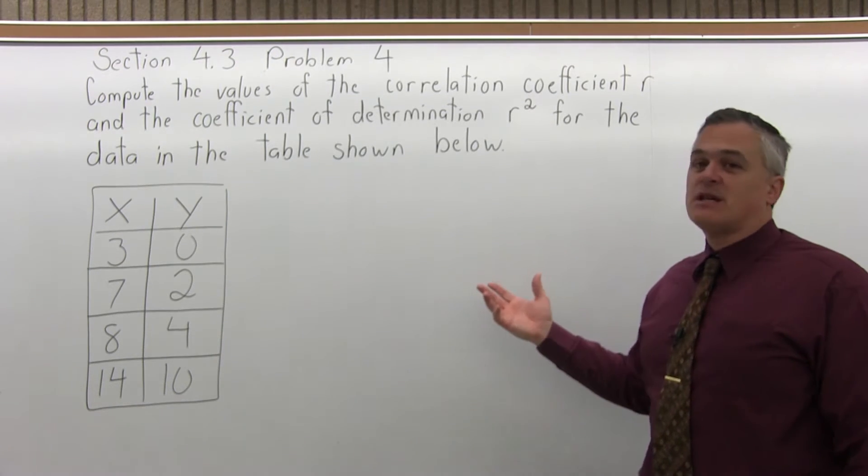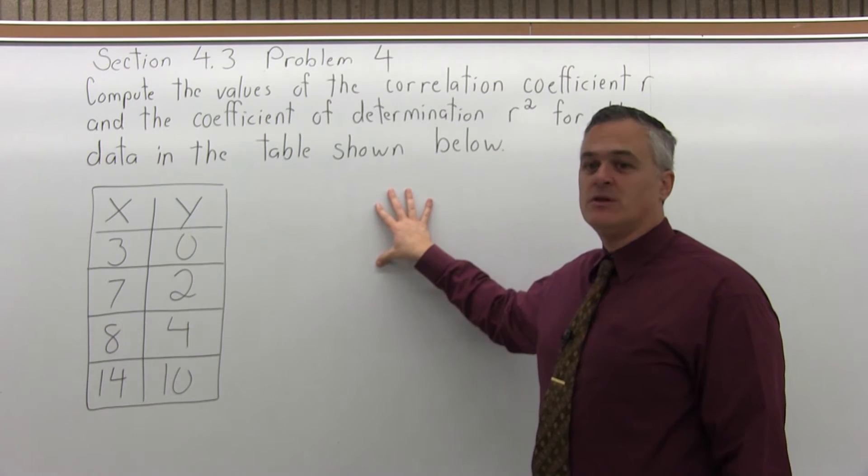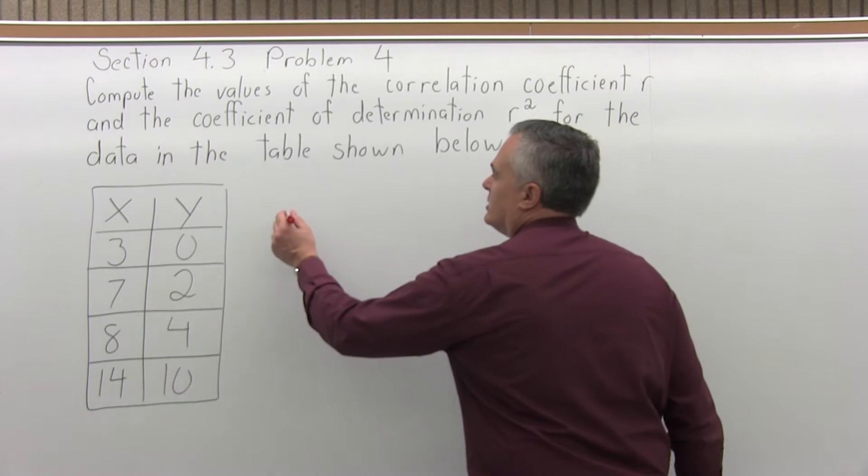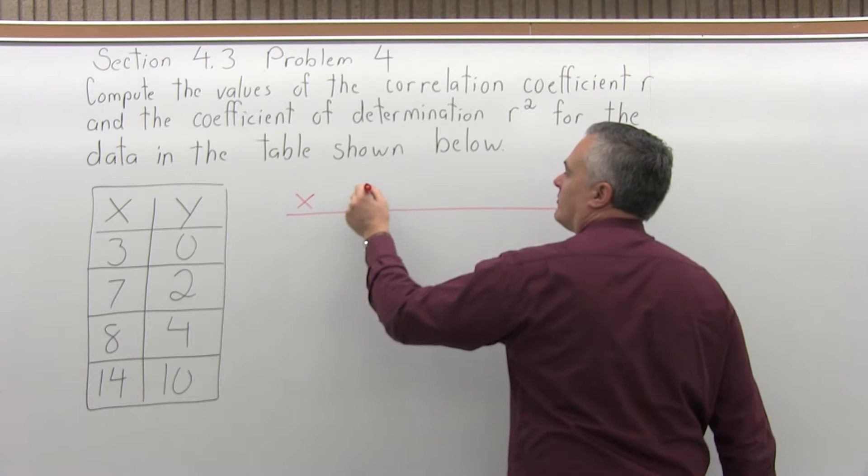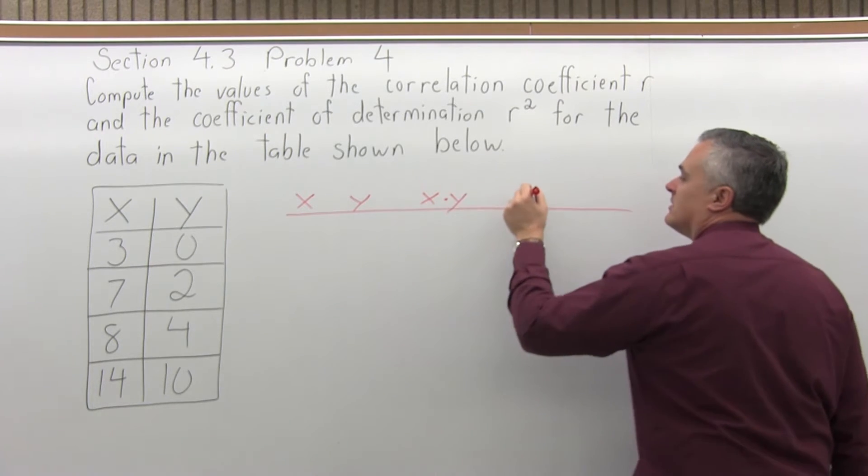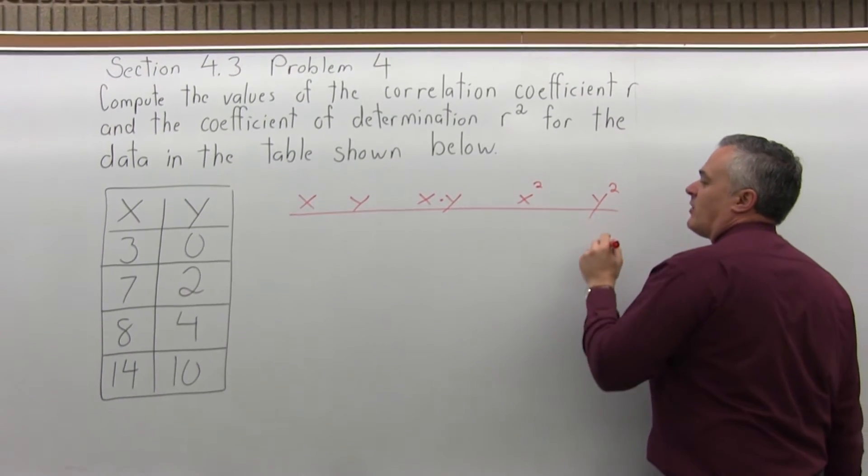So to compute these values, that's the big formula with the R. First thing we have to do is fill out a table and the values from the table will help us fill in the formula for R. So our table will have a column for x, a column for y, a column for x times y, a column for x squared, and a column for y squared.